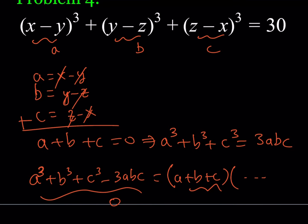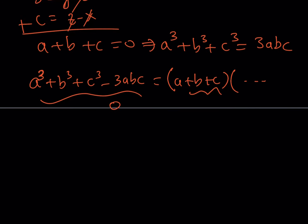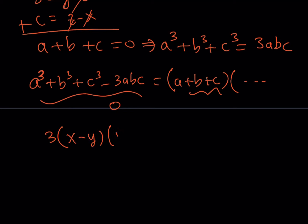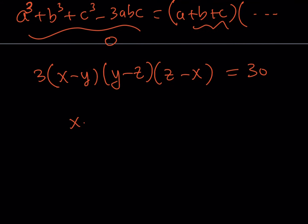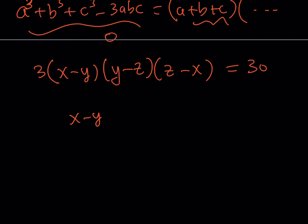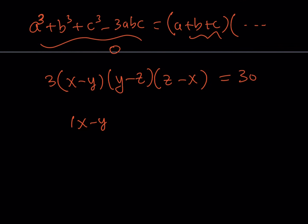This simplifies our equation: 3abc = 3 × (x − y)(y − z)(z − x) = 30. Dividing both sides by 3 gives (x − y)(y − z)(z − x) = 10. Now we look for three integers whose product is 10.